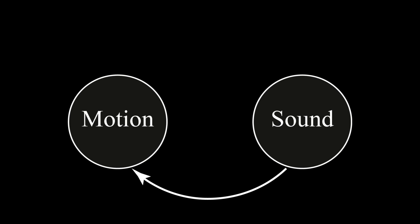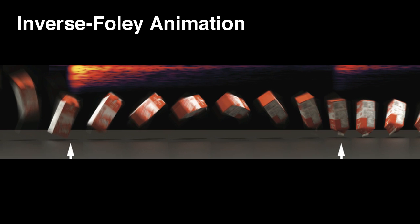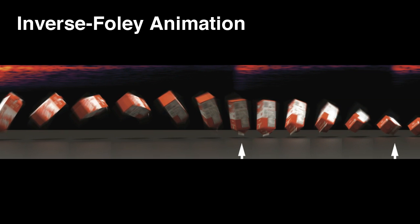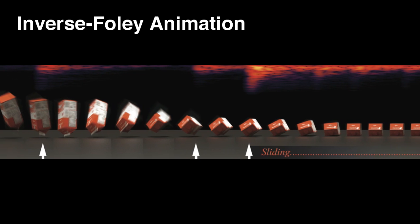In this work, we explore how to synthesize rigid body animations synchronized with input contact sounds. Given an input contact sound, such as from this real carton, our method, inverse foley animation, automatically optimizes a rigid body motion so that contact events are synchronized with the input sound events.